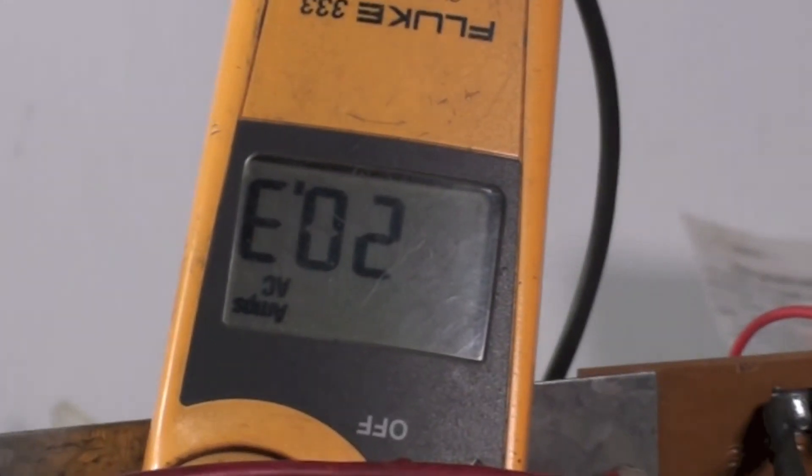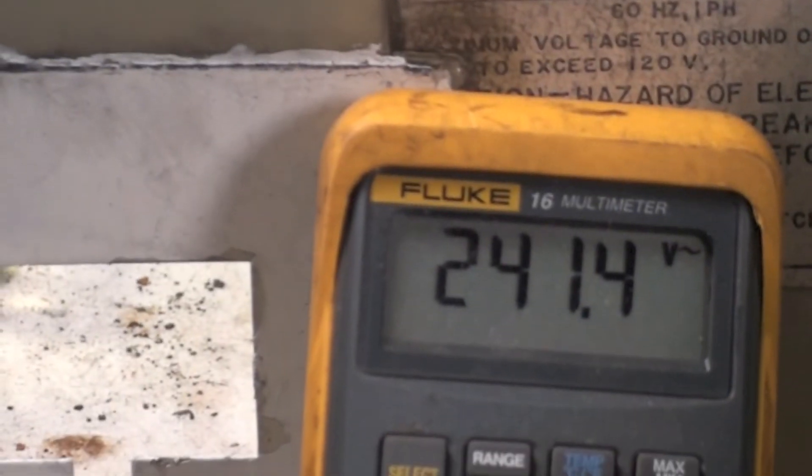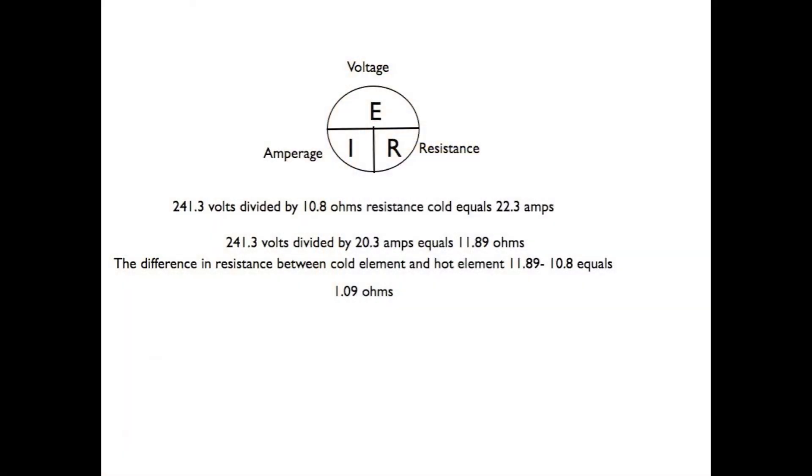So we're going to do some calculations here to determine what the actual resistance is. Okay, we can use EIR to calculate this, and we had 241.3 volts. We divide that by the 10.8 ohms resistance that we read cold, and that equals potentially 22.3 amps if the element was cold.